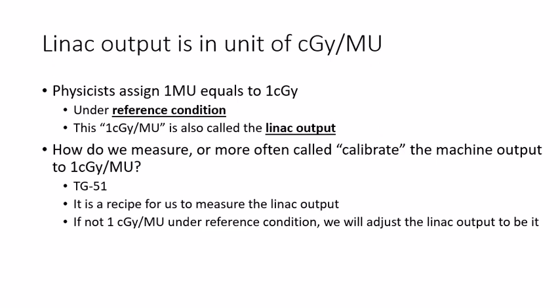Normally, medical physicists adjust the LINAC's output to 1 centigrade per MU at dmax during any test under reference condition. How do we do it? We follow a recipe called TG51.